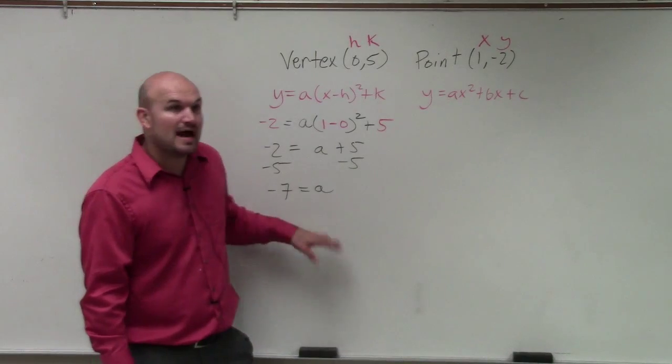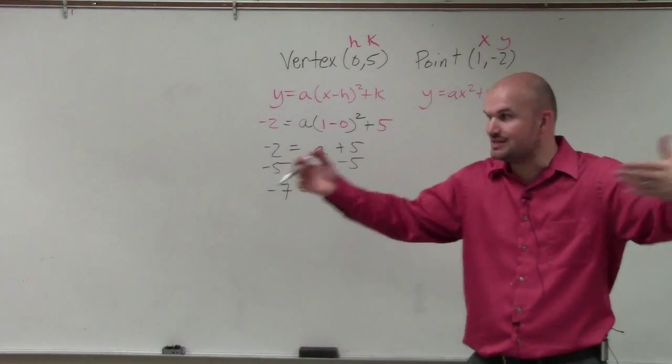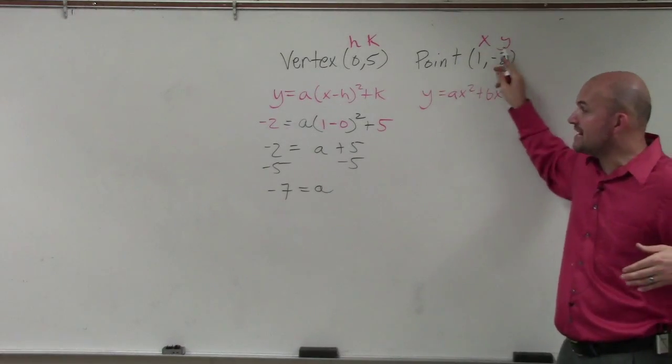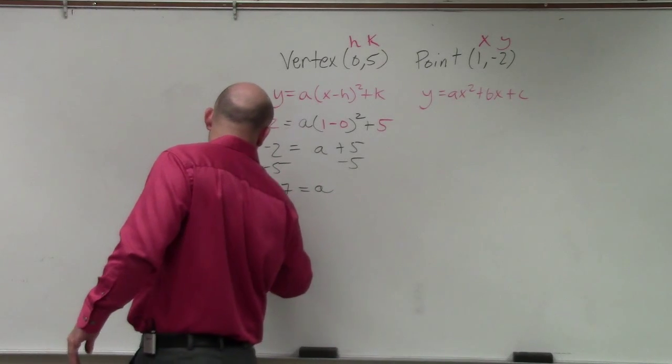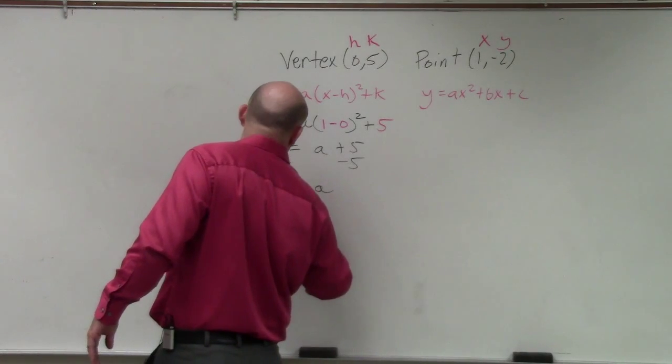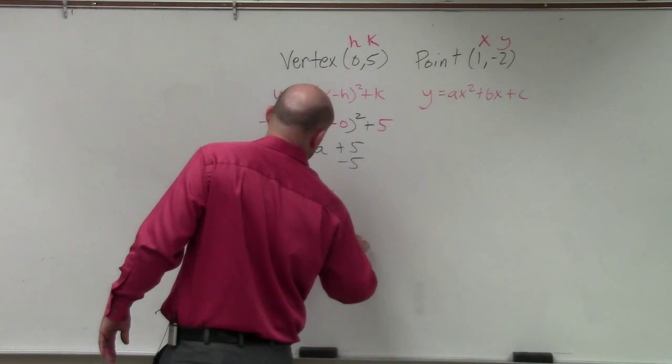Does everybody follow that? So now, when we're writing the equation of a line, though, the equation represents infinitely many points, infinitely many x, y's. We just had to plug in this one x, y so we could find the value of a. So my equation in vertex form is y equals negative 7 times x minus 0 squared plus 5.